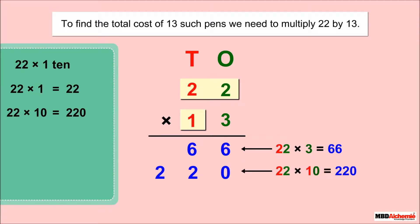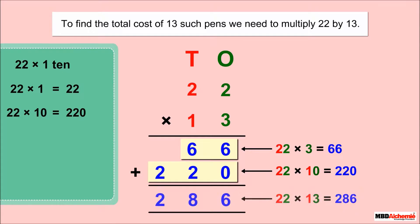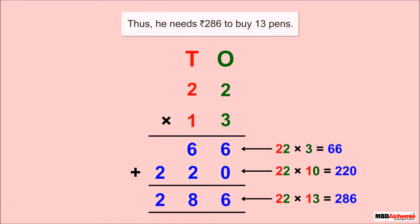Now, add the product obtained. Add 66 and 220. It gives 286. Thus, he needs 286 rupees to buy 13 pens.